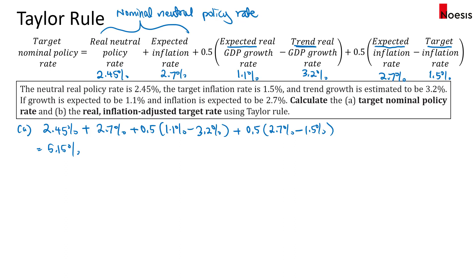For the GDP growth difference, this gives negative 1.05 percent. For the inflation rate difference multiplied by half, that will be positive 0.6 percent. The sum equals 4.7 percent.